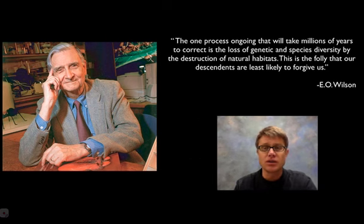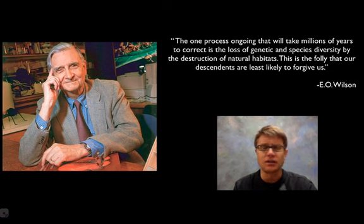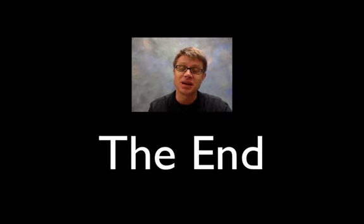I wanted to leave you with this quote from E.O. Wilson. In the 1980s, when people were talking to him about the Cold War and nuclear buildup, he said: 'The one process ongoing that will take millions of years to correct is the loss of genetic and species diversity by destruction of natural habitats. This is the folly our descendants are least likely to forgive us.' It's important that you understand you're part of an ecosystem — you clearly are a keystone species and you can make big changes. And with that, that's the end.